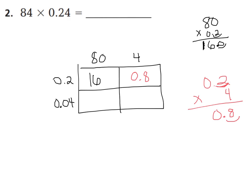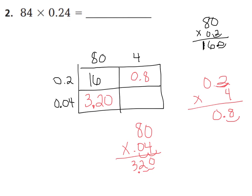Now let's go to 80 times 4 hundredths. I'll write 80 times 0.04. 4 times 0 is 0, 4 times 8 is 32. We don't have to multiply the zero — we know we have two spots to the hundredths place, so I put two spots to my hundredths here. If I have 80 groups of 4 hundredths, that ends up as 3 wholes and 20 hundredths, or 2 tenths.